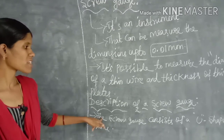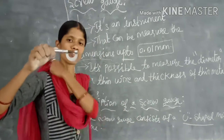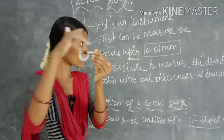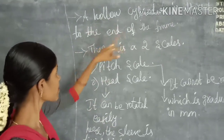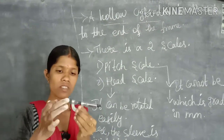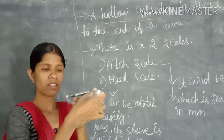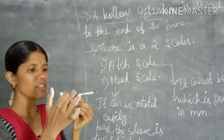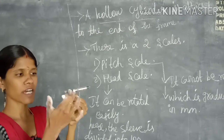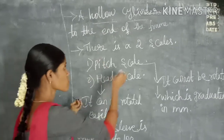Now the description of the screw gauge. The screw gauge consists of a U-shaped metal frame. A hollow cylinder is attached to one end of this frame. So this is the U-shaped metal frame, and this is the hollow cylinder attached to one end of it.